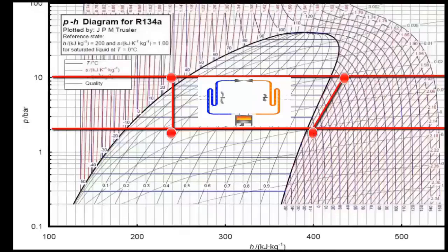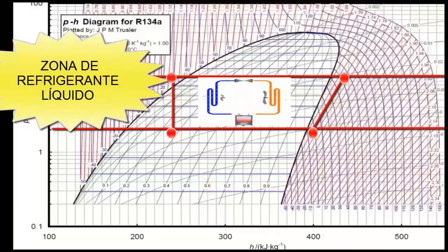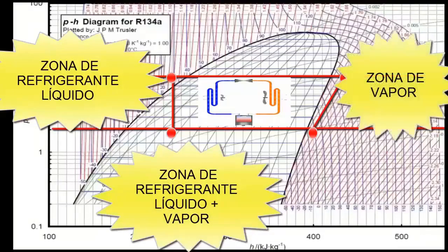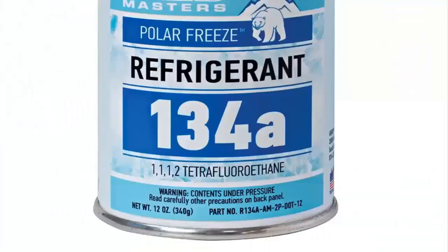In the diagram we can see the phases of the refrigerant within the refrigeration cycle. Zone where the refrigerant is in only liquid phase. Zone where the refrigerant is in liquid and vapor phase at the same time. Zone where the refrigerant is in only vapor phase.